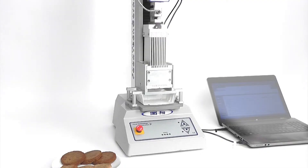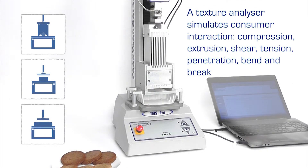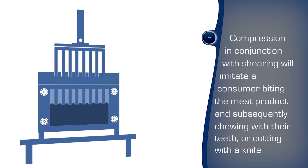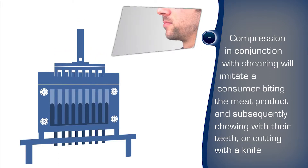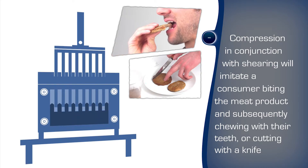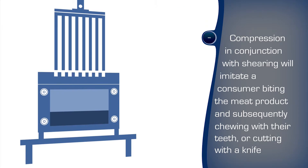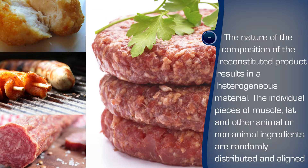A texture analyser enables the measurement of attributes which reflect the consumer's experience by simulating the interaction: compression, shear, extrusion, tension, penetration, bend and break. A combination of compression, shear and extrusion is the most representative method for simulating a consumer biting into and chewing the burger, experiencing the desired mouthfeel, tenderness and firmness with minimal toughness, springiness or chewiness.